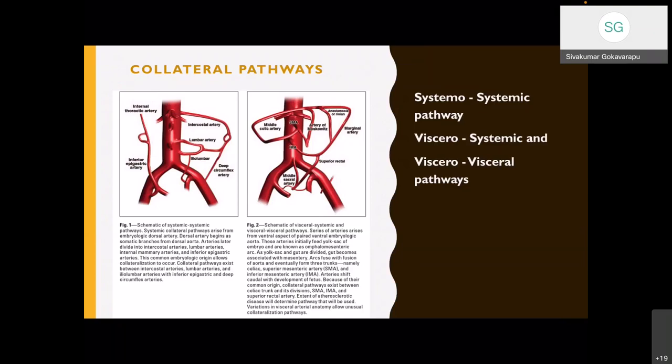These collateral pathways can be divided into systemic-systemic, visceral-systemic, and visceral-visceral pathways. The systemic-systemic pathway is mediated by the intercostal and lumbar arteries and internal thoracic and inferior epigastric arteries joining to the deep circumflex femoral artery and iliolumbar arteries. The visceral-systemic and visceral-visceral pathways are mainly mediated by the SMA, IMA, and superior hemorrhoidal arteries. It is important to recognize these during surgery because damage can lead to future limb ischemia if the vessels are excluded.